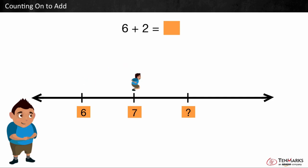What number will you say when you count on from 6? 7. We need to count on one more time. What number is next when you count on? 8. We made 2 hops forward. This means that 6 plus 2 is equal to 8.